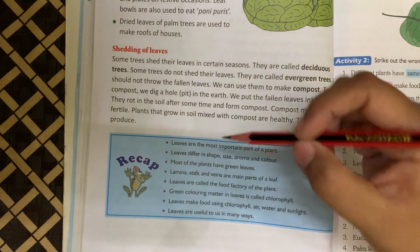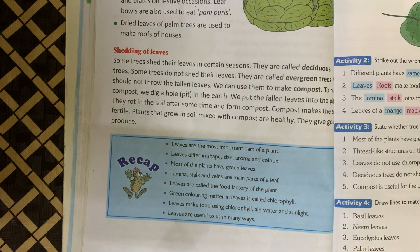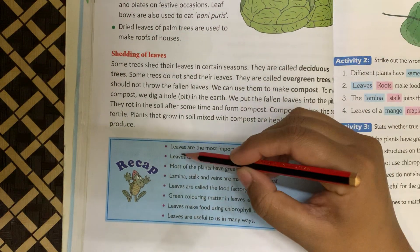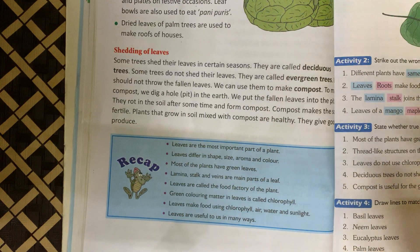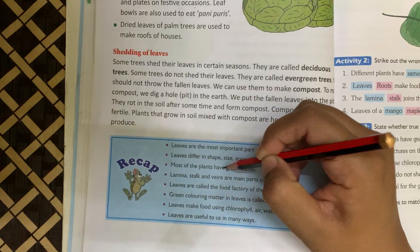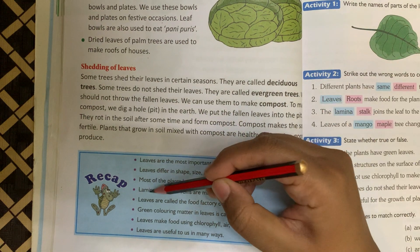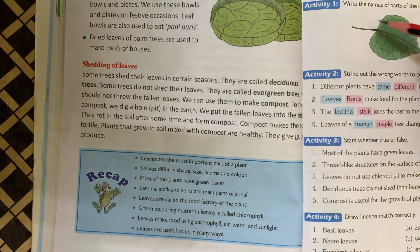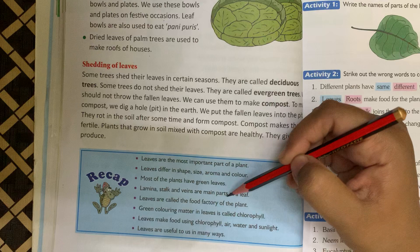Now we'll do some recap work. Leaves are the most important part of a plant. Leaves kya hain — plant ka sabse important part hain. Leaves differ in shape, size, aroma and color. Leaves ke alag-alag size hote hain, alag-alag shape, alag-alag color, alag-alag sab kuch. Most of the plants have green leaves. Lamina — yani ki leaf plate — stalk and veins are main parts of a leaf.